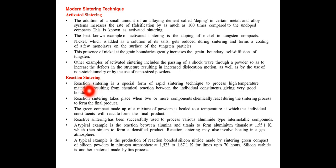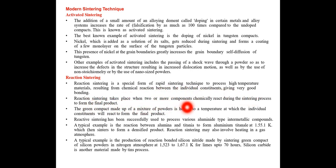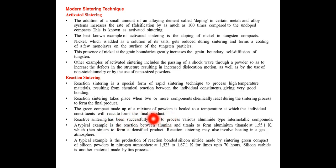Reaction sintering is a special form of rapid sintering technique to process high temperature materials, resulting from a chemical reaction between the individual constituents, giving very good bonding. Reaction sintering takes place when two or more components chemically react during the sintering process to form the final product. The green compact, made of a mixture of powders, is heated to a temperature at which the individual constituents react to form the final product.